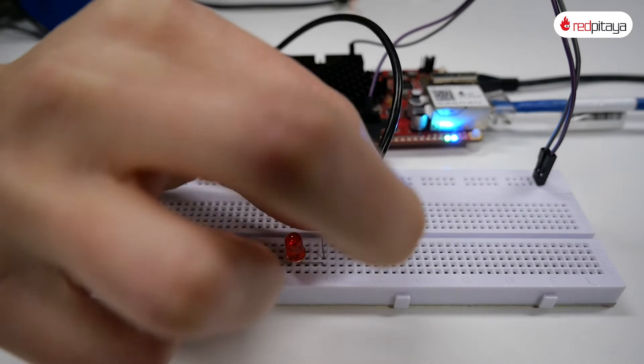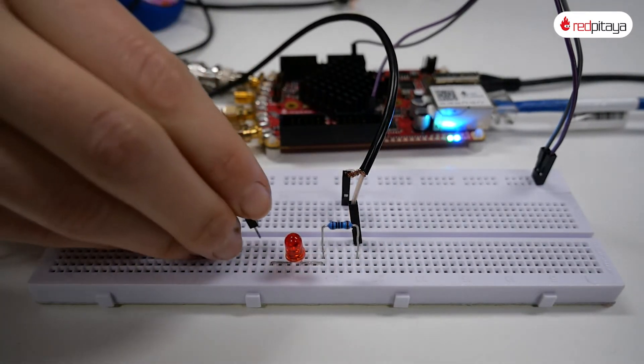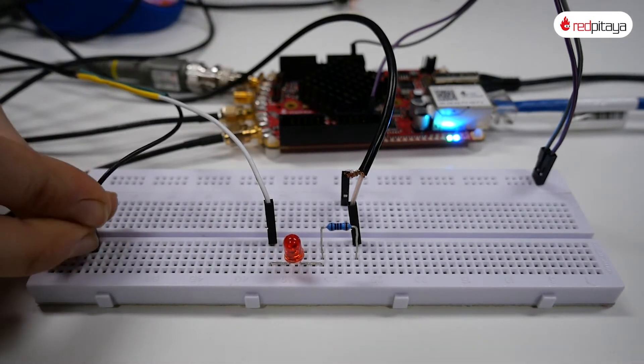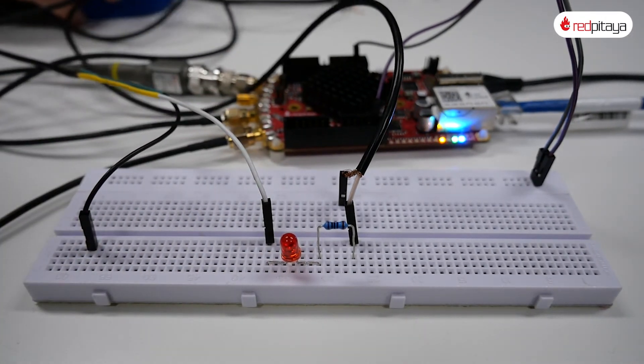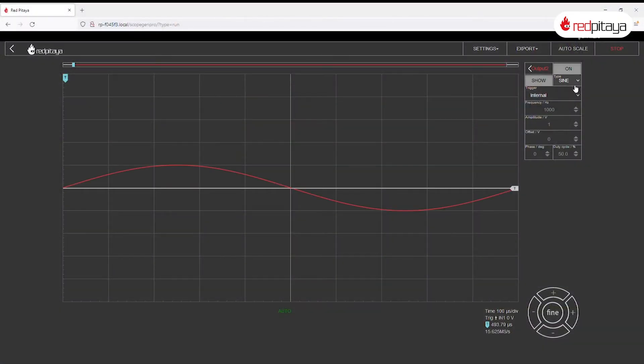But if you recall the video about diodes, one volt, the maximum that Red Pitaya can output, won't be enough to power an LED with a threshold voltage of 1.6 volts. To resolve this problem I'll simply set the Red Pitaya second output to be the DC signal at negative 1 volt and use that instead of ground.